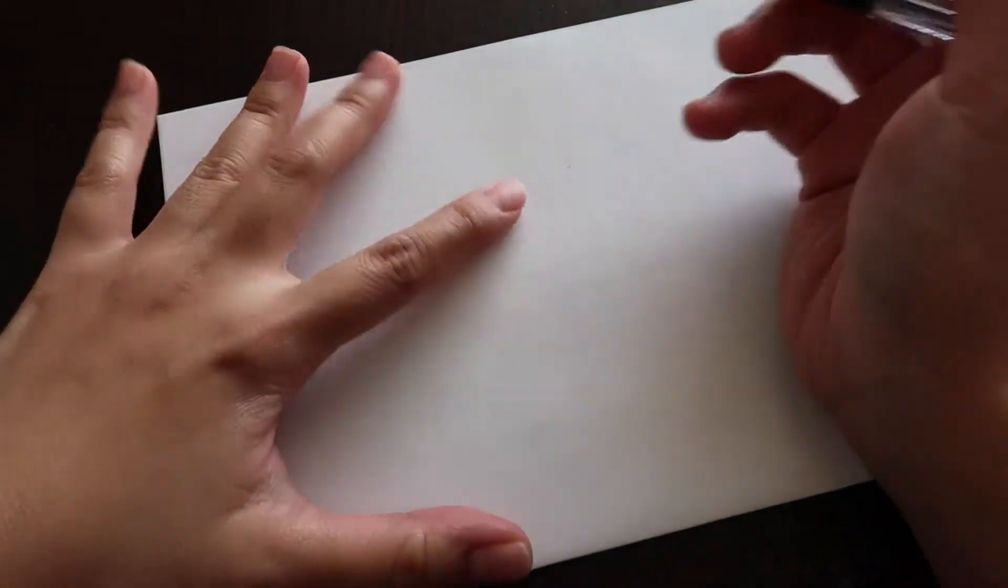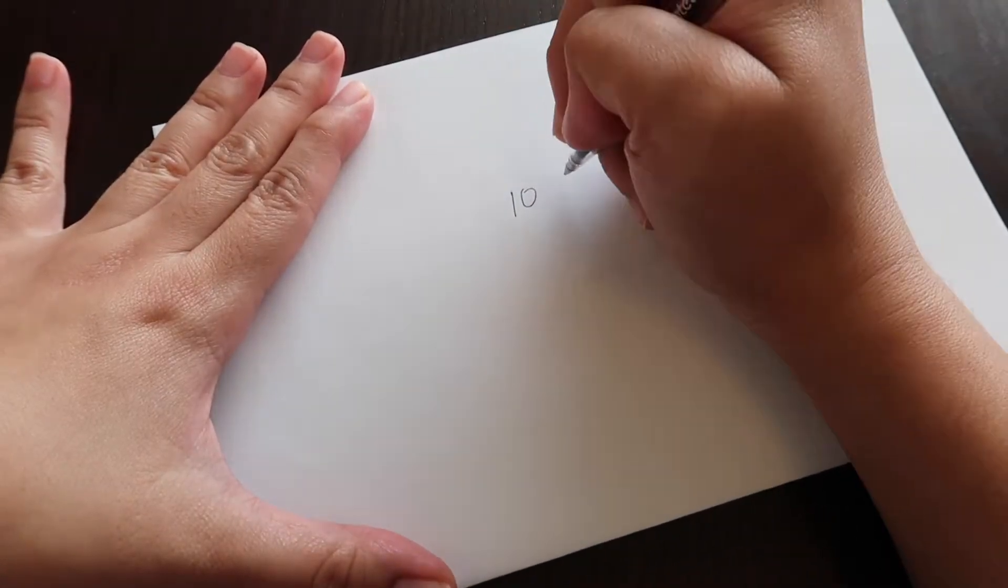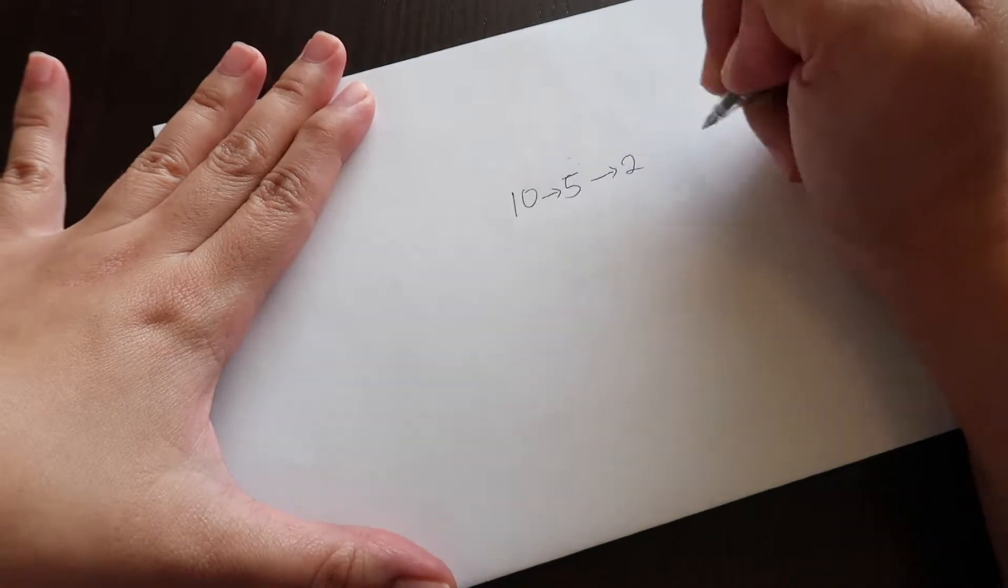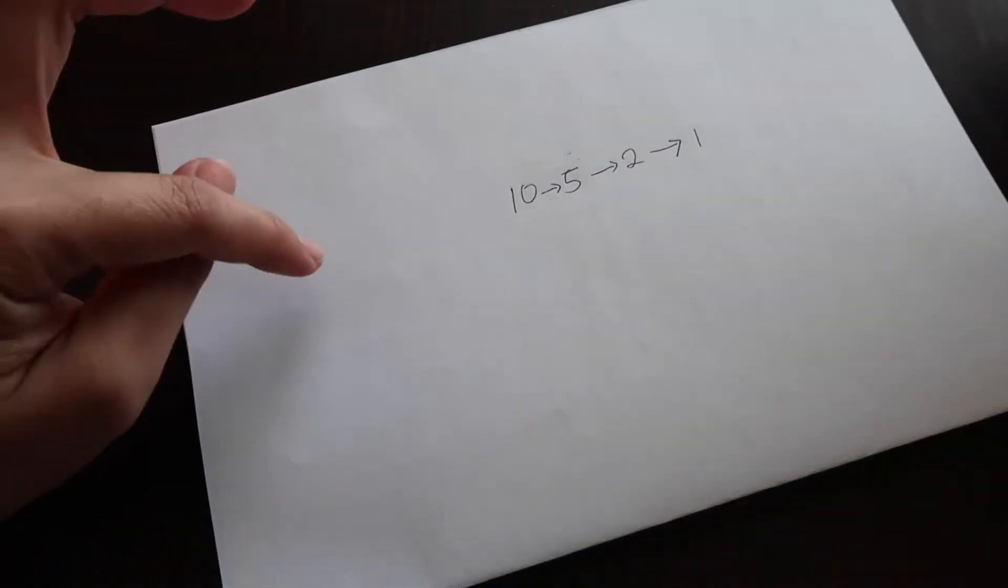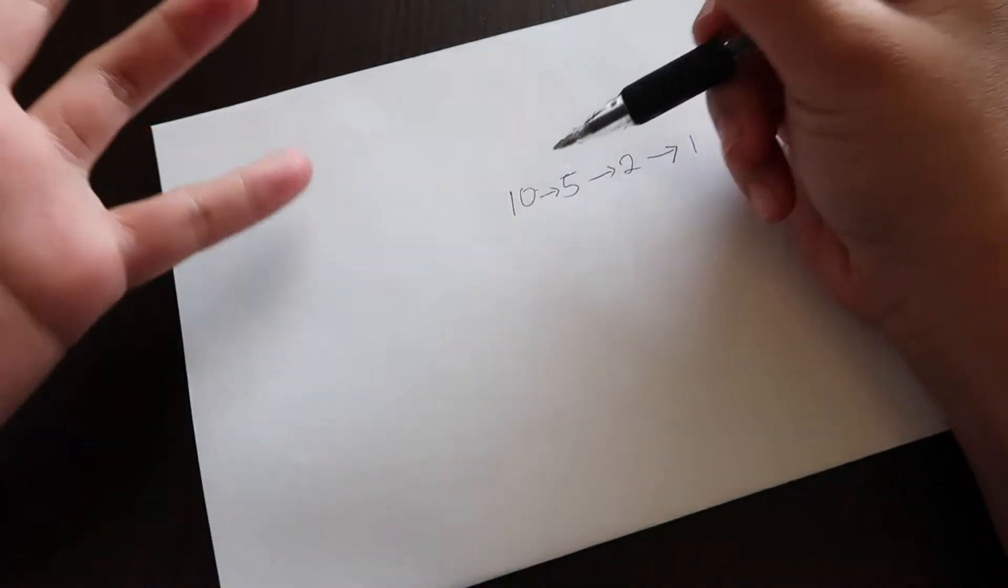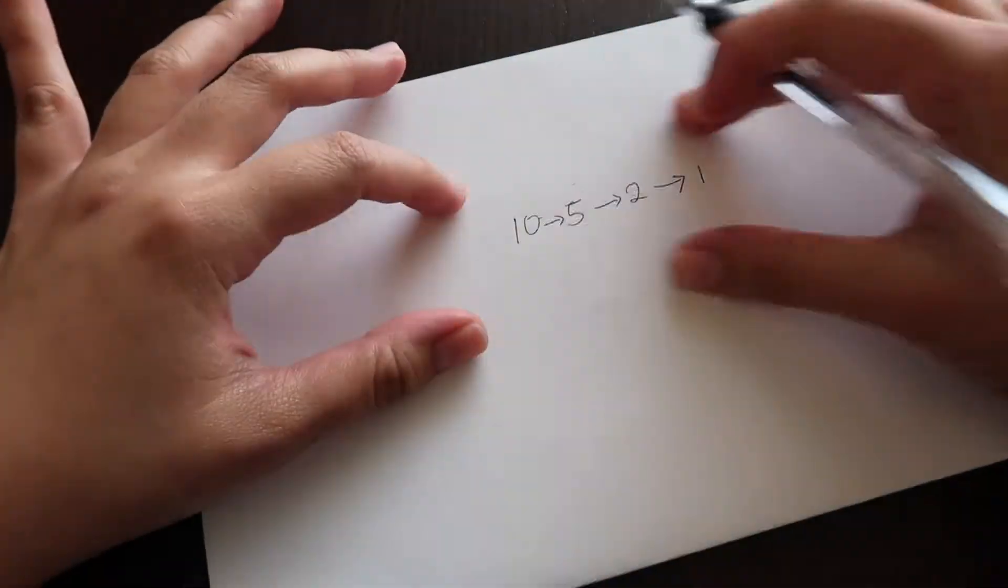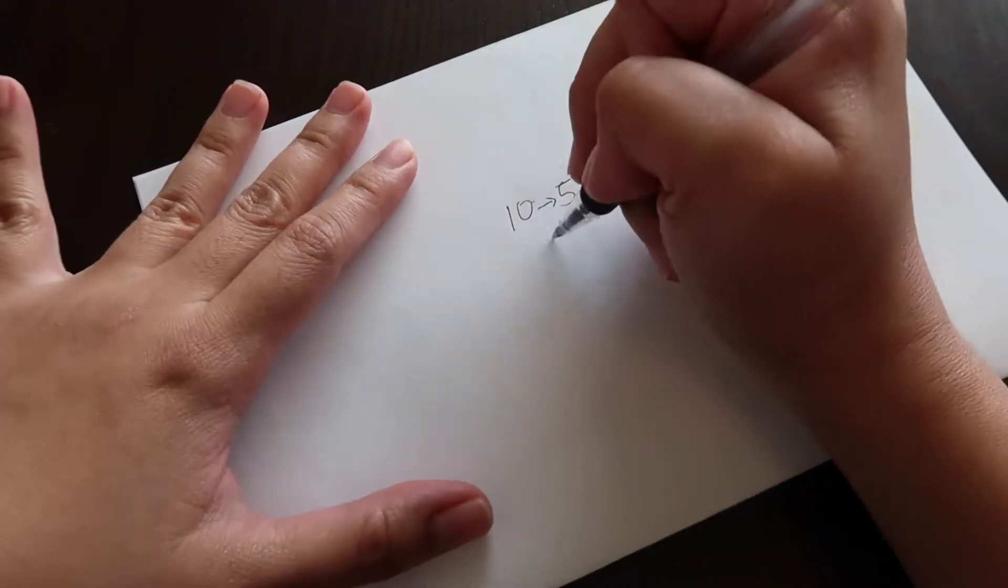Let's start. First of all, you want to memorize the coagulation pathway factors. It's easy to memorize the common pathway, which is factor 10, 5, 2, and 1, because they can also stand for ten dollars, five dollars, two dollars, and a dollar. They can stand as money denominations, and so it's easy to memorize them. That's the common pathway.